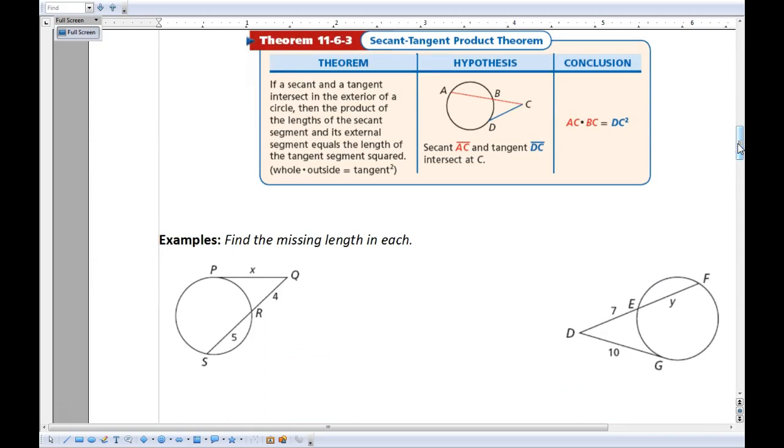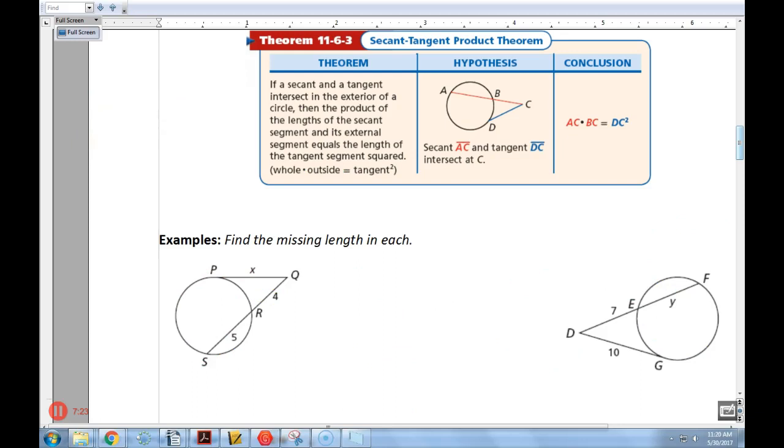And then we finally have the last one, and the last one is when you have a secant and a tangent. And it's actually the exact same as the last one. It's whole times outside, and then they say equals tangent squared, but that's really the same thing as the whole times the outside. It's just the whole is the outside. So however you want to look at it, it doesn't really matter, but it's a similar idea.